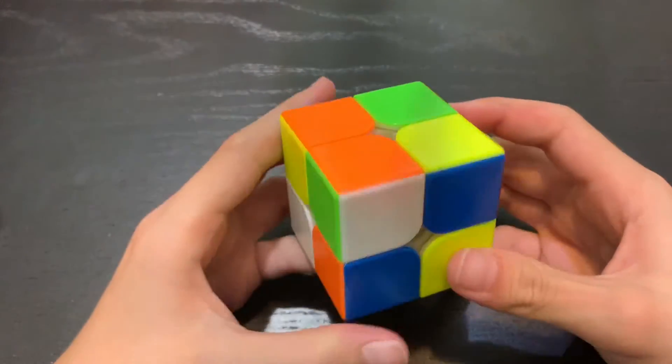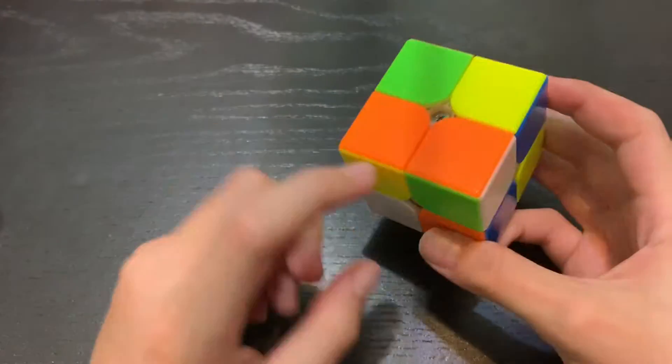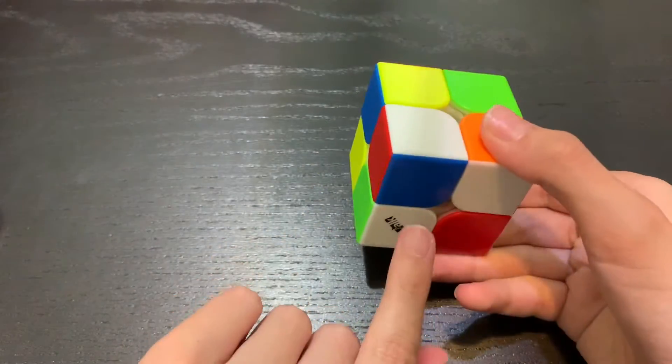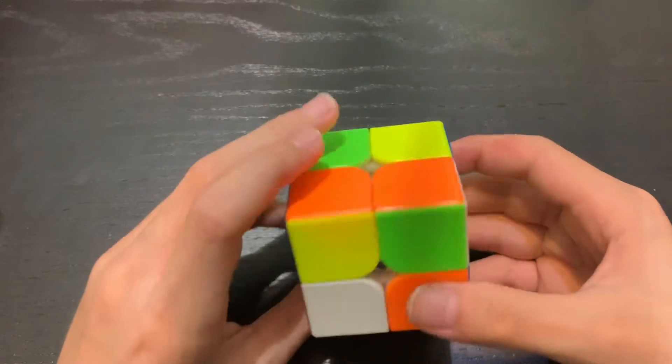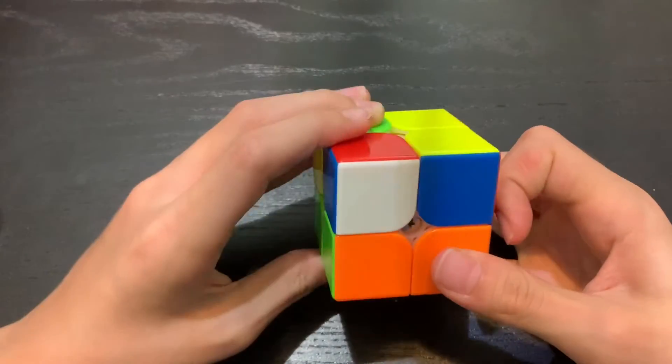Now I have to find other pieces. I have white, green, and orange. For this one, I have to insert the white side on this side. So I bring it up, move the white to where it has to go, and bring it back down.